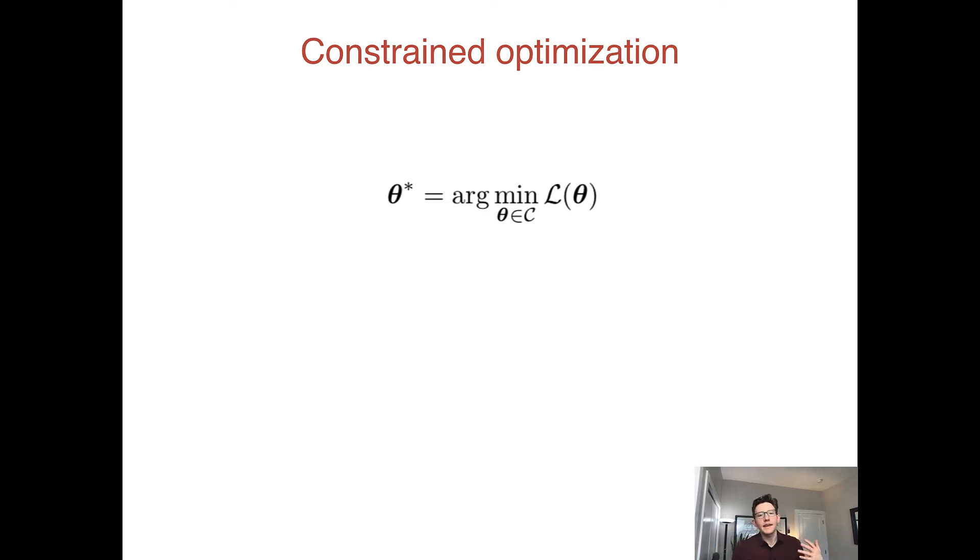Sometimes just finding a feasible value for the parameters can be difficult in its own right, not to mention actually finding the specific optimum given the constraints. That said, we are going to talk about one constrained optimization algorithm because it's one that comes up very often in machine learning and probabilistic models.